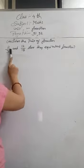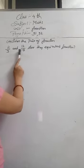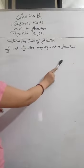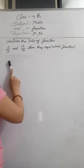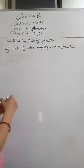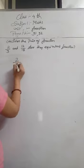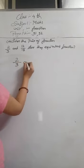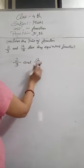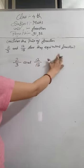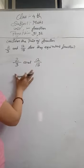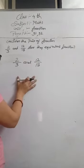Consider the pair of fractions 2 by 3 and 12 by 18 — are they equivalent fractions? So we have to find here whether 2 by 3 and 12 by 18 are equivalent fractions or not.